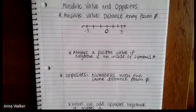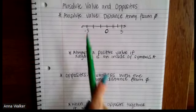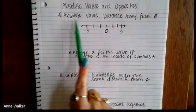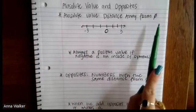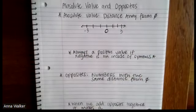So today we're going to talk about what an absolute value and an opposite is when we talk about numbers. This is going to become a very important part when we start to work with negative numbers. The absolute value of a number is a number's distance away from zero.